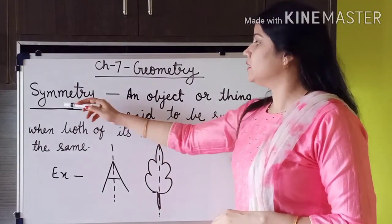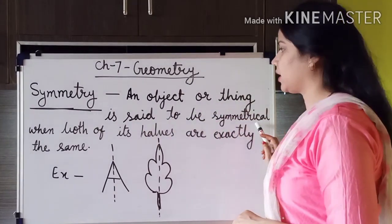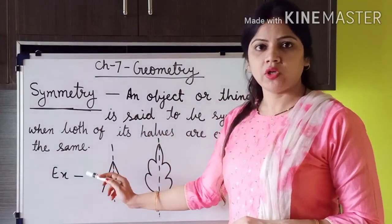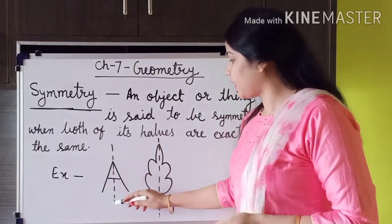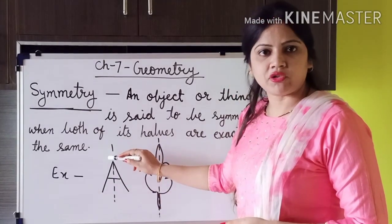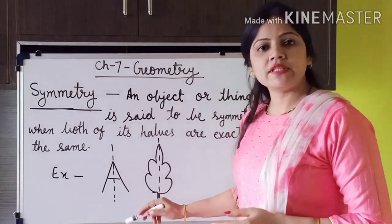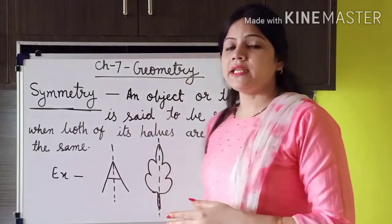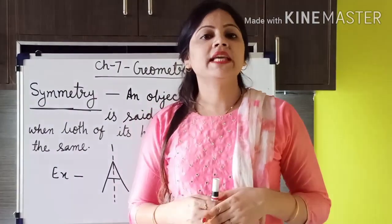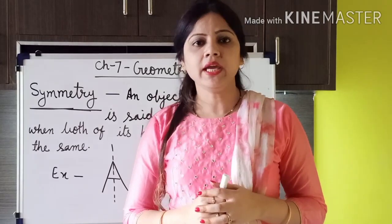An object or thing is said to be symmetrical when both of its halves are exactly the same. I have given examples — the letter A and a leaf — where the dotted lines are the lines of symmetry. Our body also has a line of symmetry; if you draw a line, both halves of our body are the same. Just pause this video and write these examples in your maths notebook.